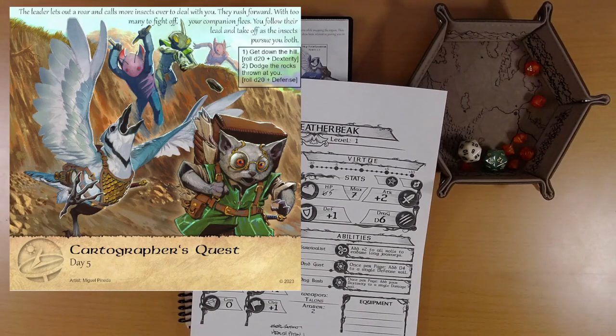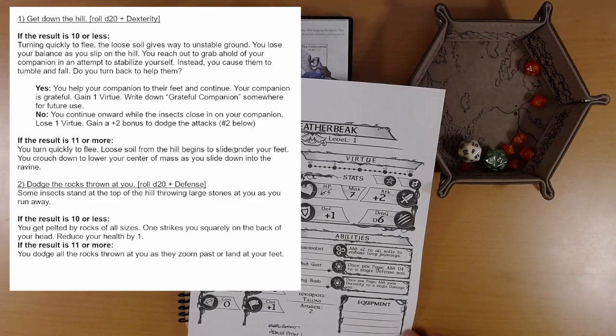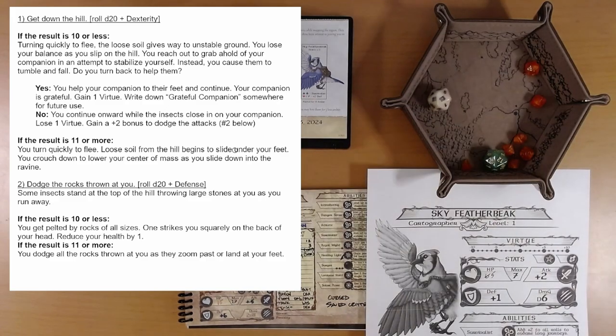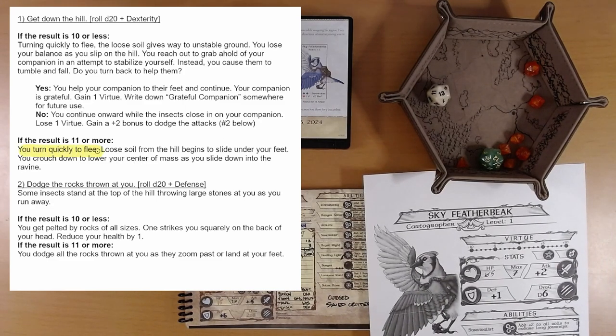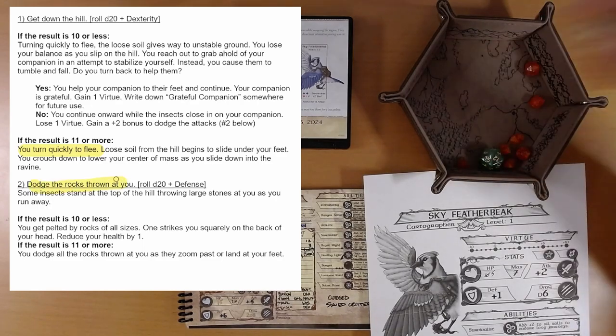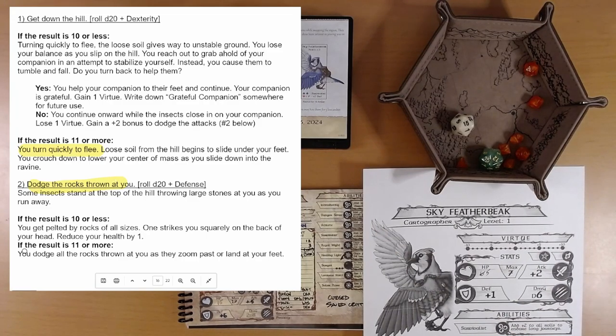Day five. The leader lets out a roar and calls more insects over to deal with you. They rush forward. With too many to fight off, your companion flees. There's Ivy, wide-eyed and running for his life. You follow their lead and take off as the insects pursue you both. Get down the hill. D20 plus dexterity. That's a good one for us. Thirteen plus two is fifteen. That's the best result. You turn quickly to flee. Loose soil from the hill begins to slide under your feet. You crouch down to lower your center of mass as you slide down into the ravine.